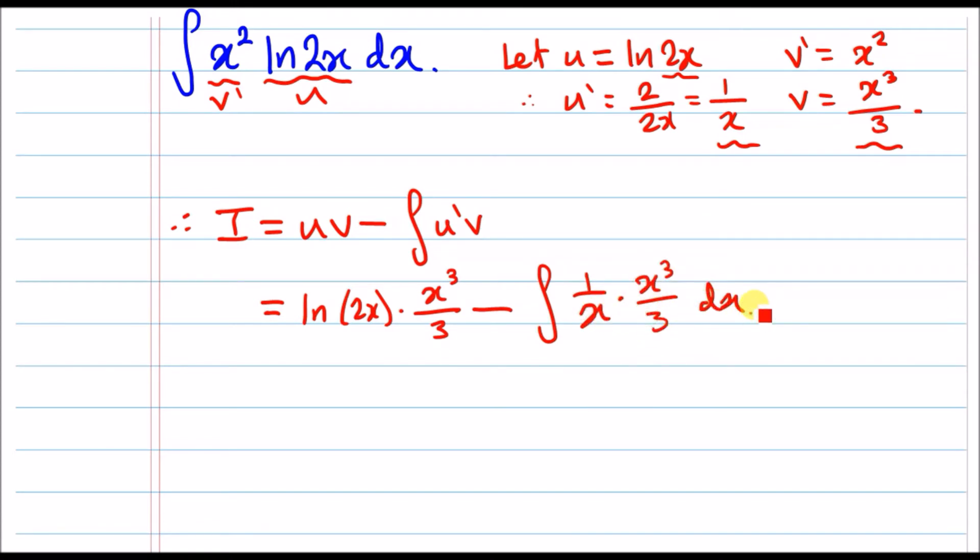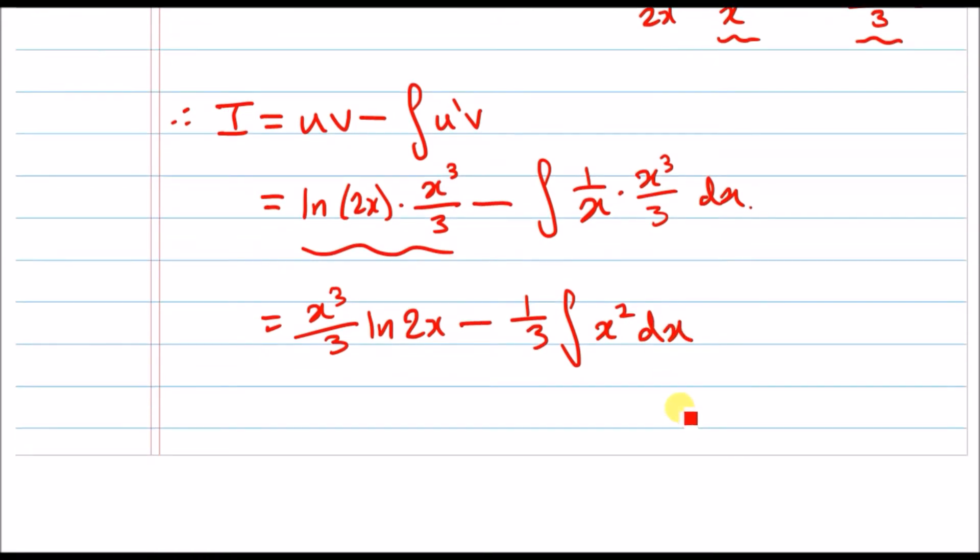Now before we go ahead and just do all the math, we're going to go ahead and just tie this up here. So I like to put my x cubed in front. So I'm going to put x cubed over 3 in front of the ln 2x and then minus and then notice how we've got 3 in the constant bit. So we can whip it out. So we've got 1 third outside and then 1 over x times x cubed is x squared. Now that part is straightforward. So integrating x squared is just dead easy.